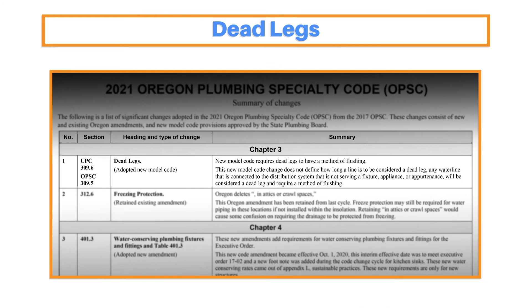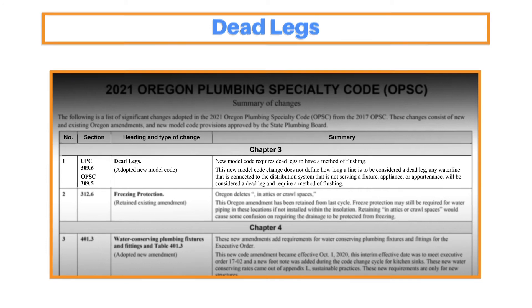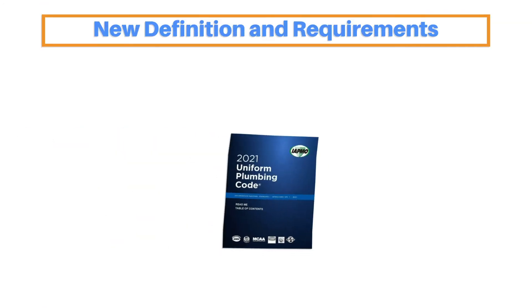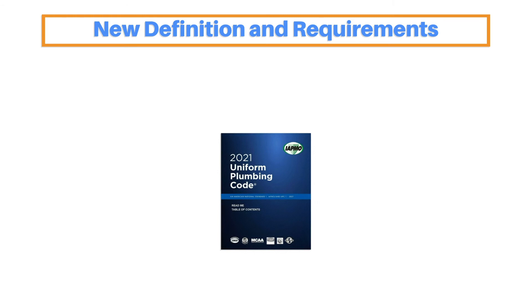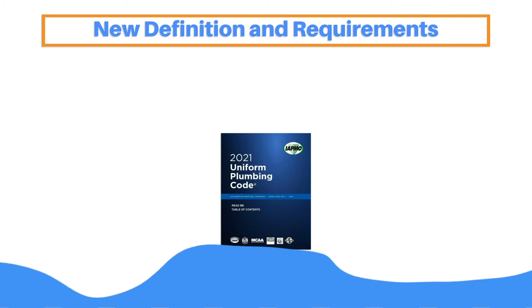One of the most important changes was the addition of requirements for Dead Legs. In previous editions of the UPC, the concept of a dead leg was practically non-existent and didn't have any sort of requirements associated with it. For the 2021 UPC, we have not only a new definition and a new requirement for dead legs, but an entirely new appendix that addresses the issues arising from stagnant water.